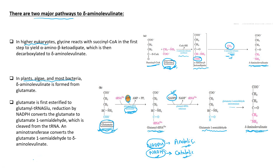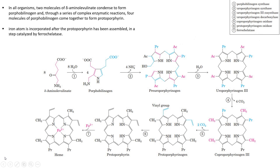This is the pathway of formation of delta-aminolevulinate in higher eukaryotes as well as in plants, algae, and most bacteria. Once delta-aminolevulinate is formed, the pathway is the same regardless of the organism. Two molecules of delta-aminolevulinate condense together to form one molecule of porphobilinogen.